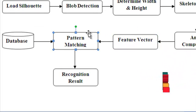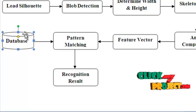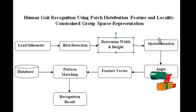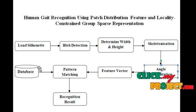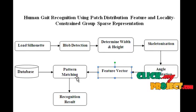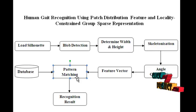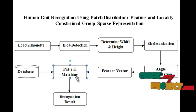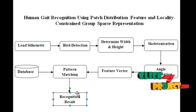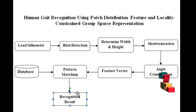Now, for pattern matching, the silhouettes collected in the database are processed through blob detection, height and width estimation, skeletonization, and angle computation. All these features are collected in the form of a feature matrix. This feature matrix and the feature vector computed for the test silhouette image are both inputs for pattern matching. In this pattern matching stage, we use Locality Constrained Group Sparse Representation, which reduces dimensionality and in turn reduces time complexity. Finally, we obtain the recognition result — the given silhouette sequence is matched with the corresponding person available in the database.